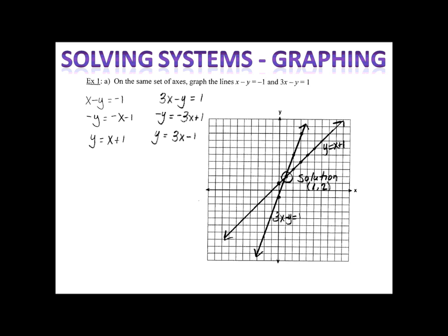My y-intercept is at negative one, my slope is three. I plot the points, connect them with a nice straight ruler, draw the arrows, and label the graph. As I look at the graph, I see that the intersection is at the point (1, 2). Because the intersection is at the point (1, 2), I call that my solution. I've circled it on the graph and labeled it as such.